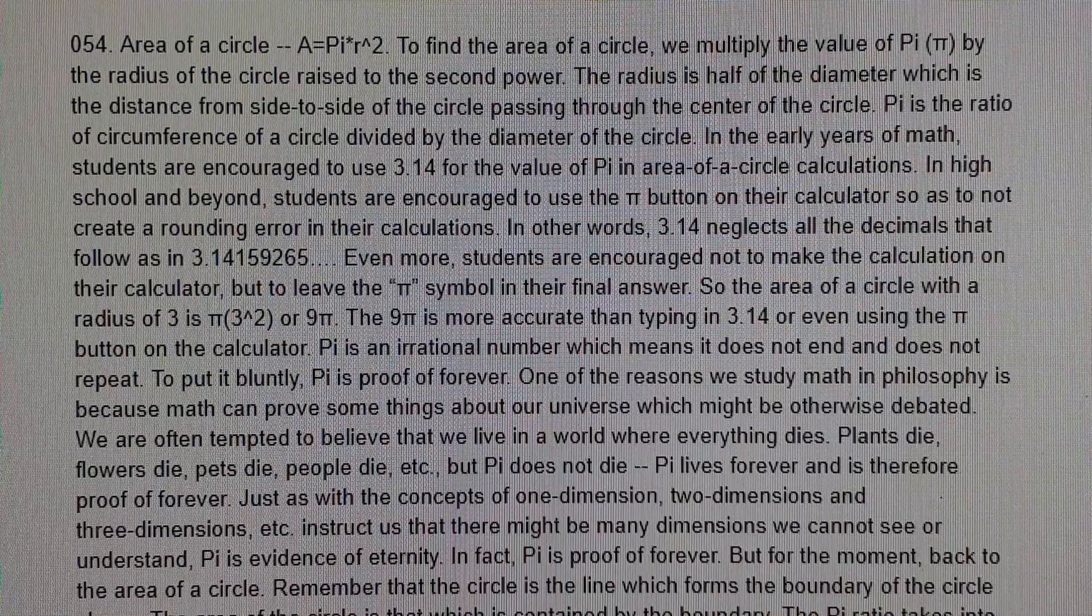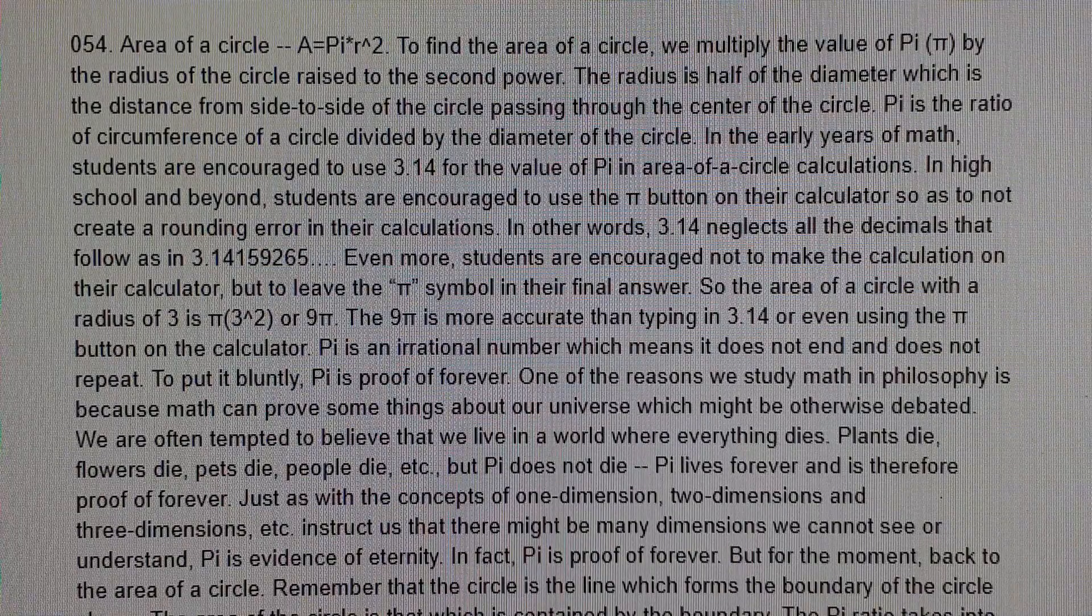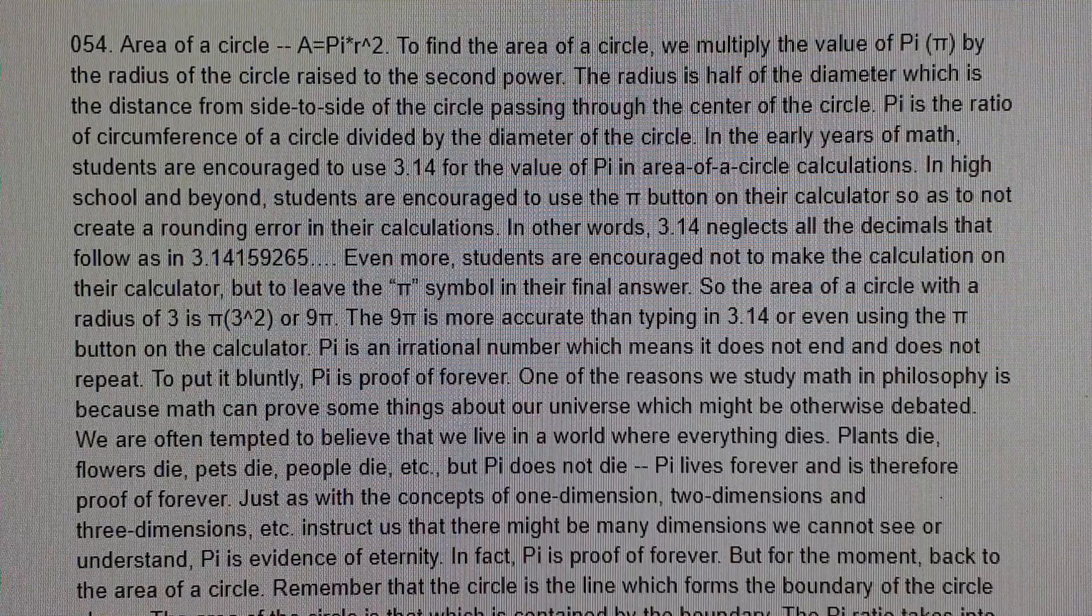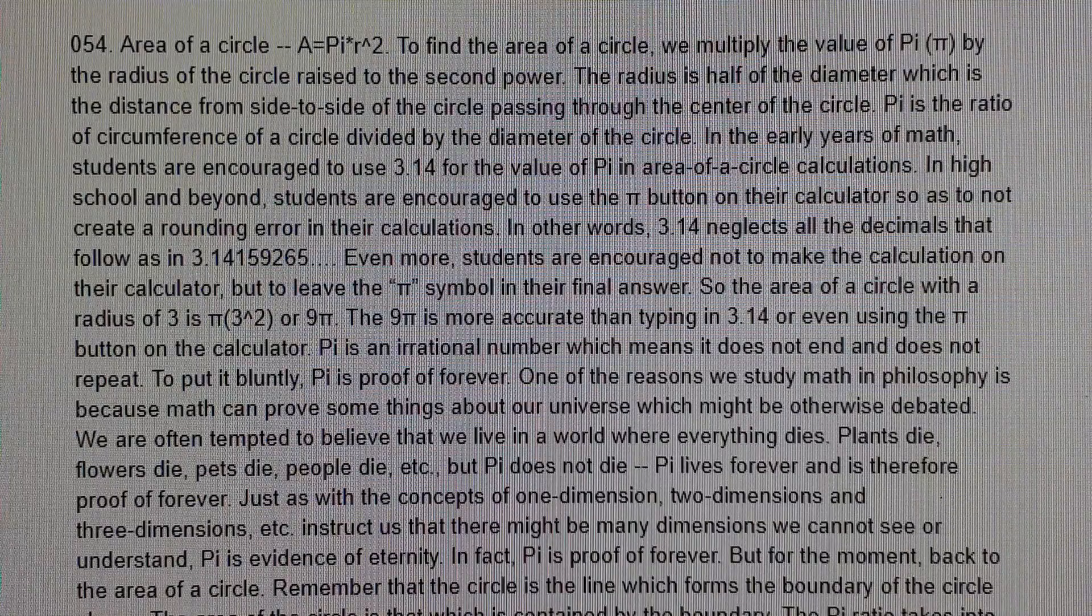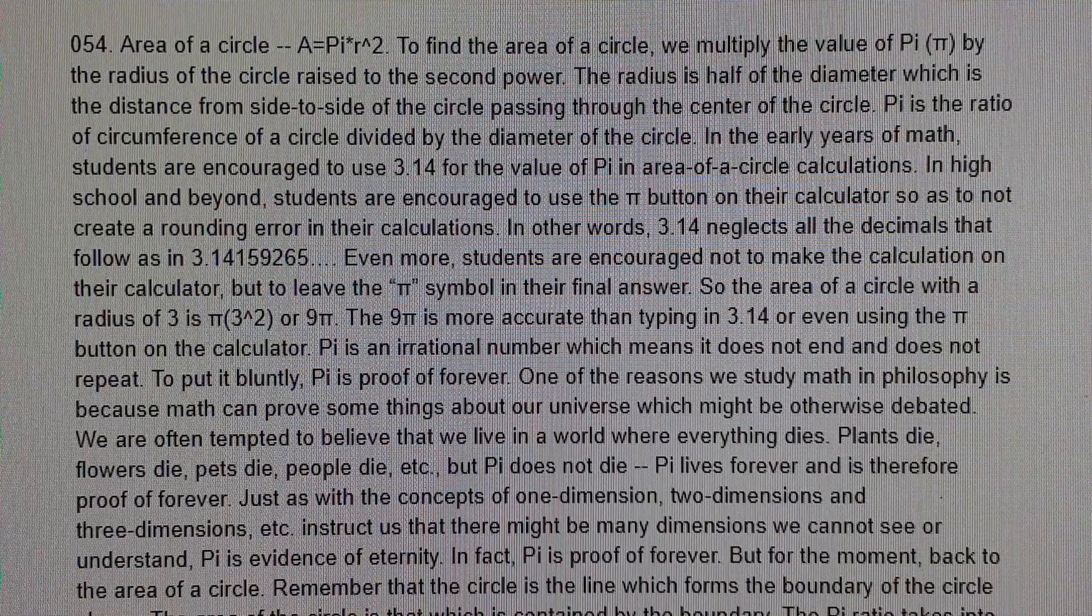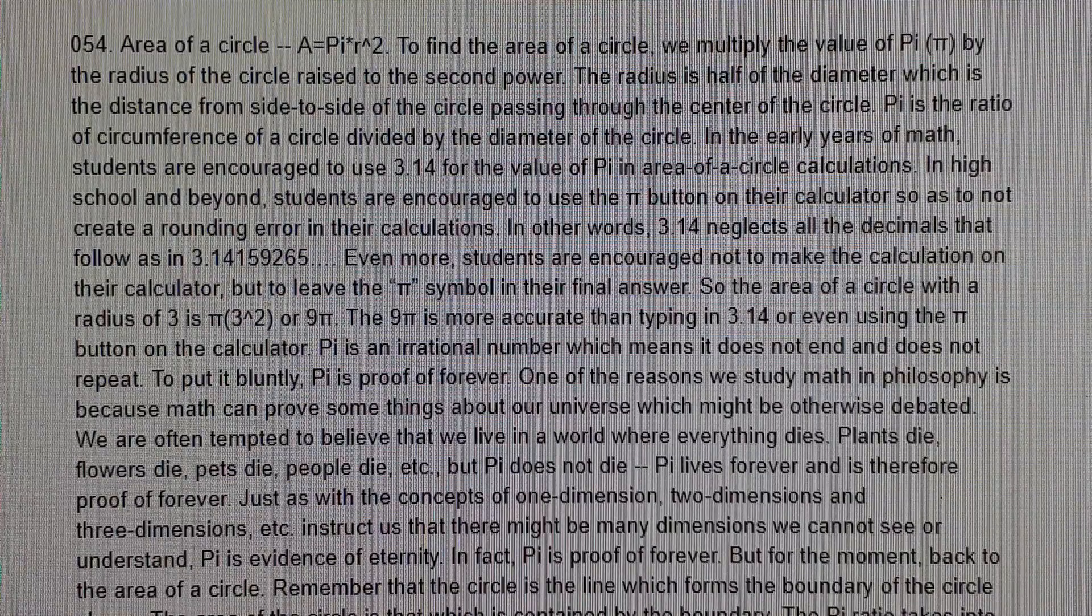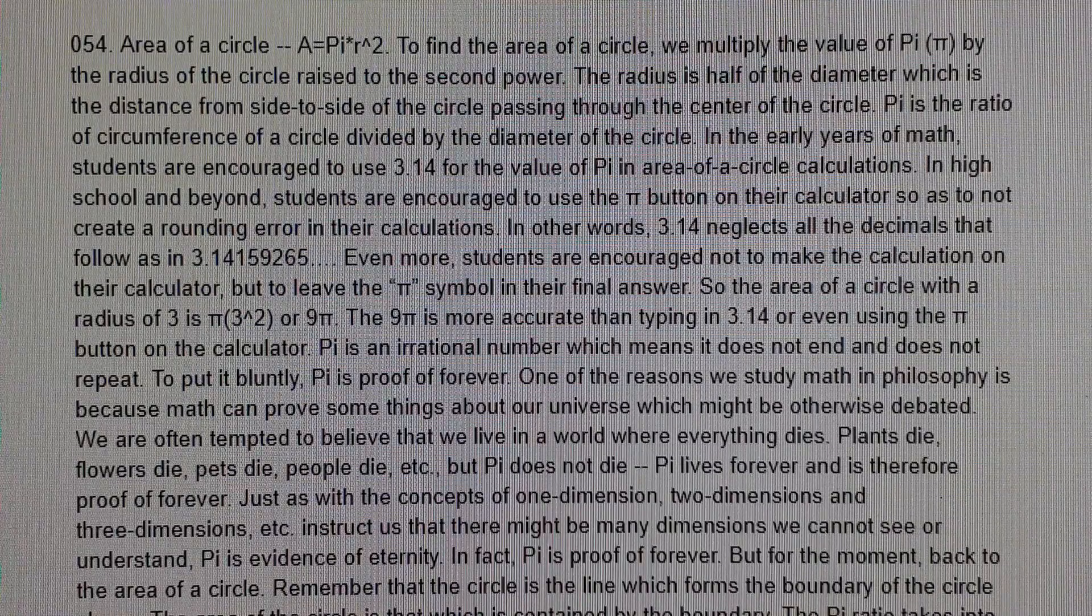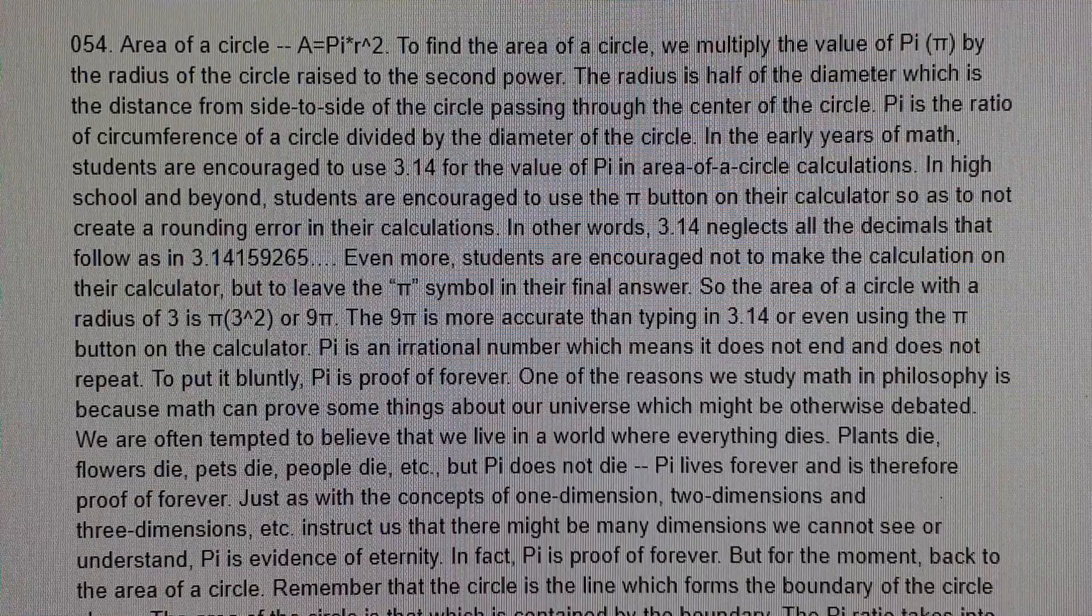The radius is half of the diameter, which is the distance from side to side of the circle passing through the center of the circle. Pi is the ratio of circumference of a circle divided by the diameter of the circle.